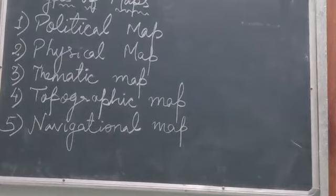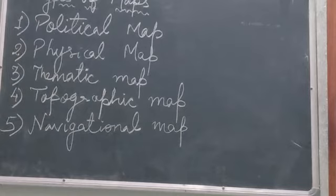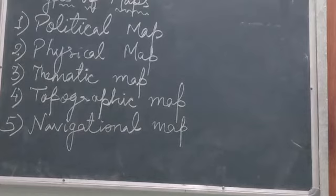What is a contour? A contour is a brown color line which shows the same height or same elevation. The line that joins points of the same height is known as a contour.